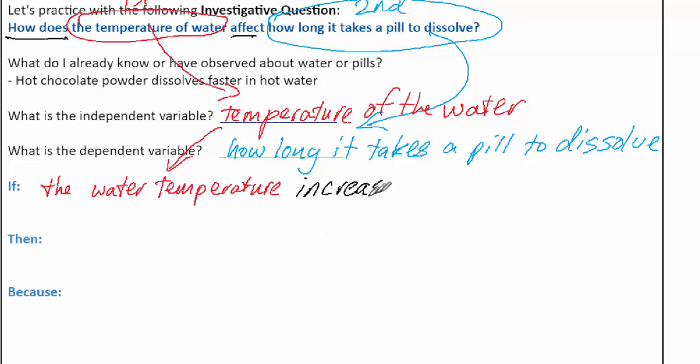Then we can talk about what happens with the dependent variable. A quick reminder that the dependent variable always comes second. So in this case, it's how long it takes a pill to dissolve. I could just write, the pill will dissolve in either more time or less time. This is a prediction.